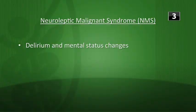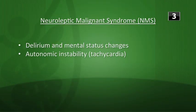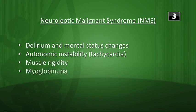Last warm-up question: what are the clinical features of neuroleptic malignant syndrome? You're going to see delirium and mental status changes early on, autonomic instability like tachycardia, then muscle rigidity, myoglobinuria, and hyperpyrexia. Okay, let's move on to the lecture.